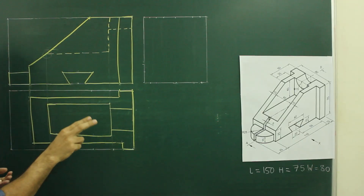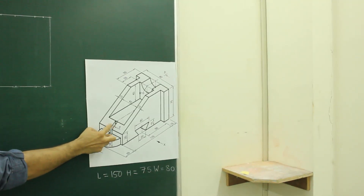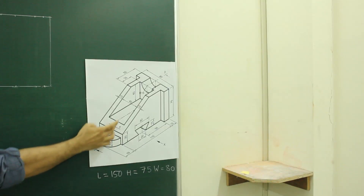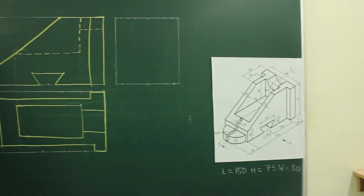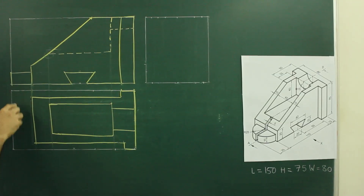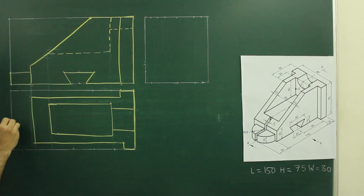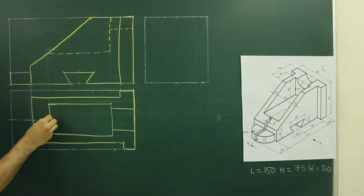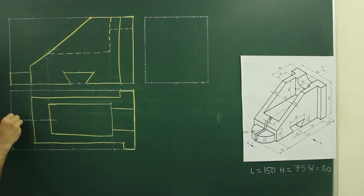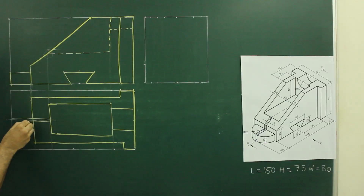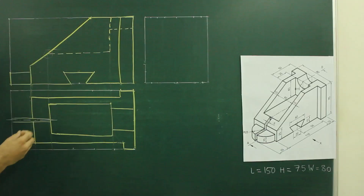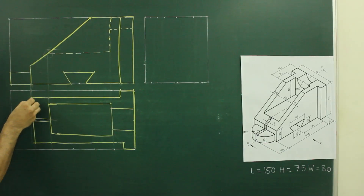In the main diagram there is a slot of width 5, which is passing through this part. So from the center we need to take 2.5 up and 2.5 down and draw the slot which is through and through. Also there is a radius 25 which we can also draw.